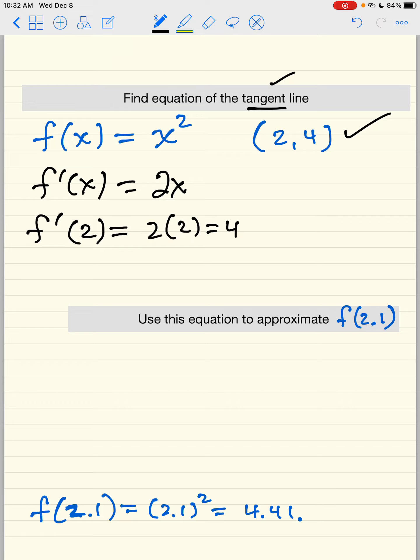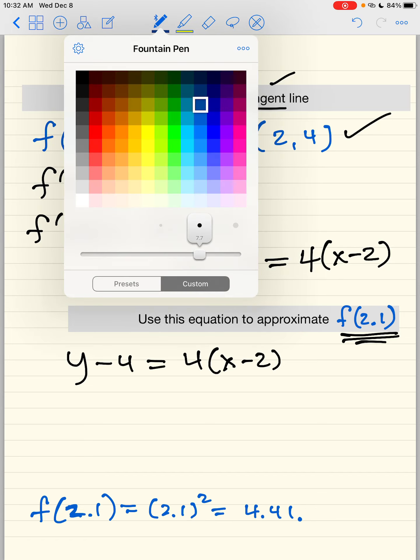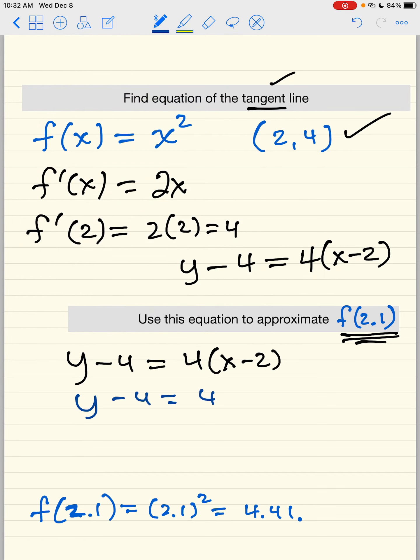So now we have a point and a slope. You're going to write down y minus your y point equals m times x minus your x point. So we should all know this. So I'm going to use this equation to approximate 2.1. So all you have to do is plug in 2.1 and just say 2.1 minus 2 is 0.1, 4 times 0.1 is 0.4. You're going to add 4 to the other side, and the approximation is 4.4.